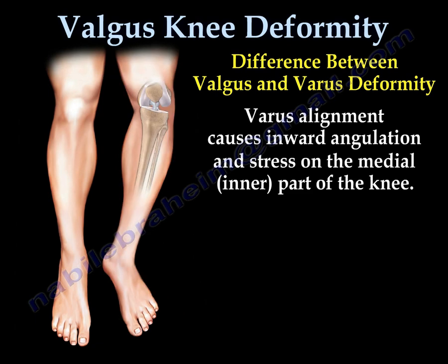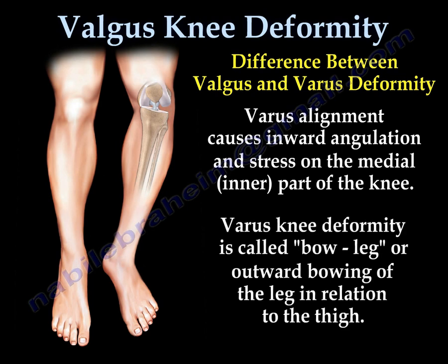Varus alignment causes inward angulation and stress on the medial part of the knee. The feet will touch each other but the knees will be apart from each other. Varus knee deformity is usually called bow leg.